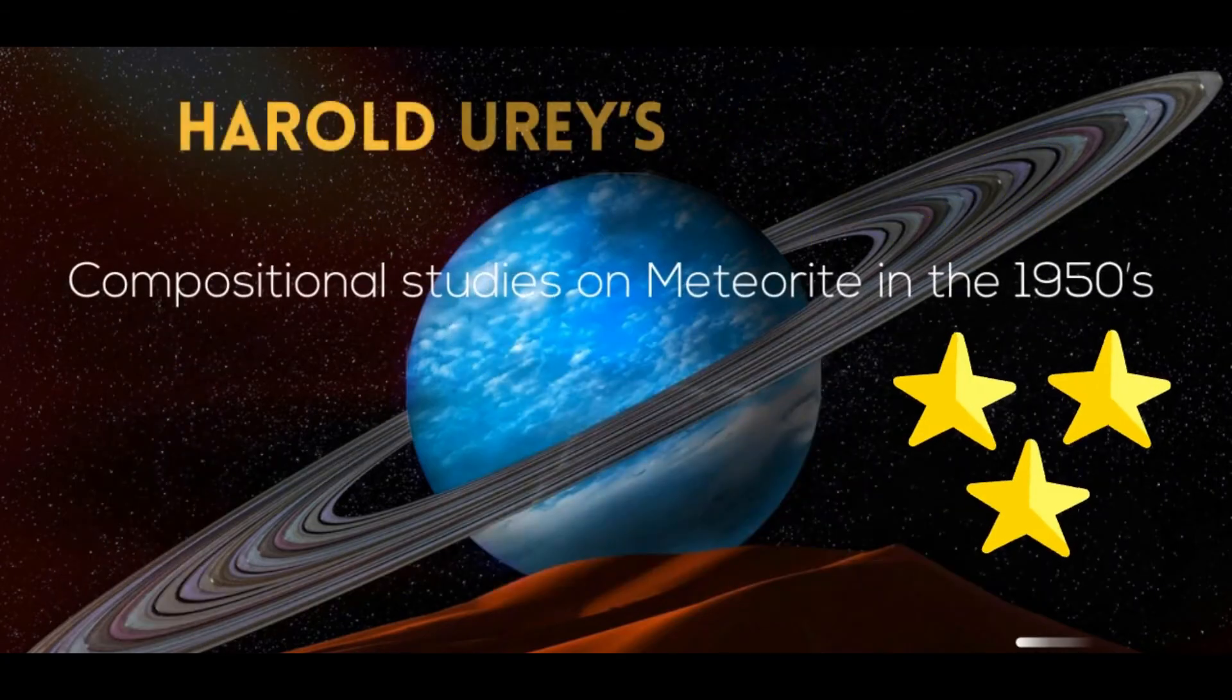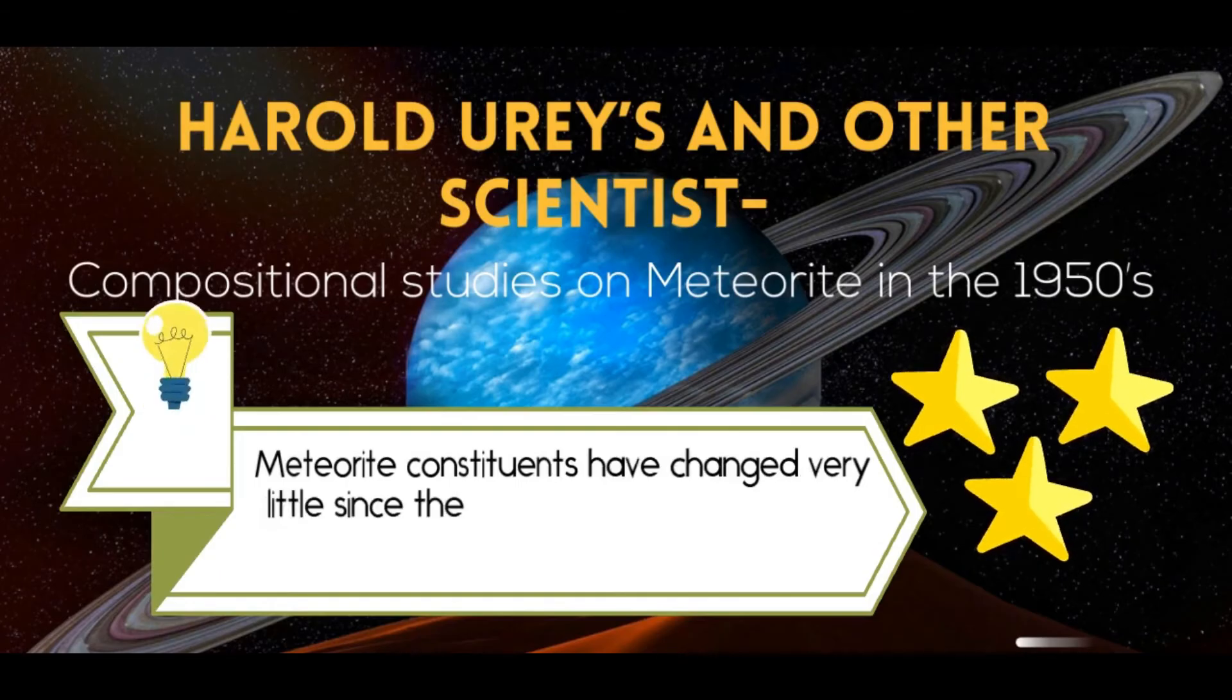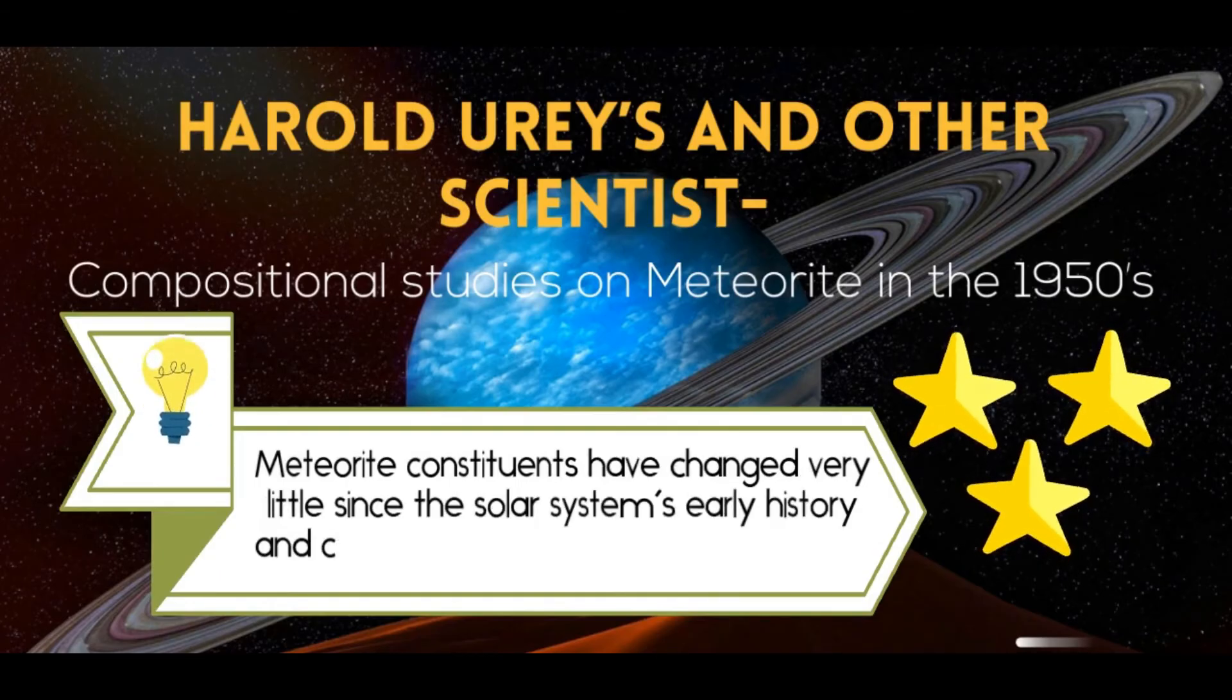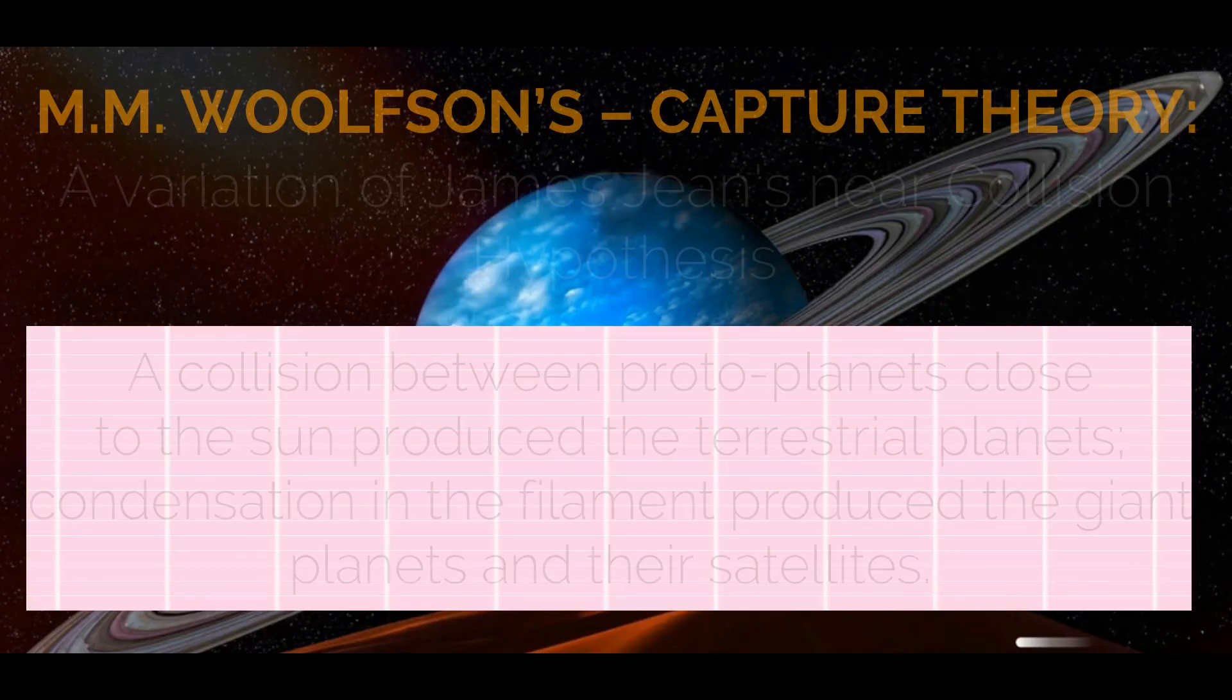Harold Urey and other scientists conclude that meteorite constituents have changed very little since the solar system's early history.